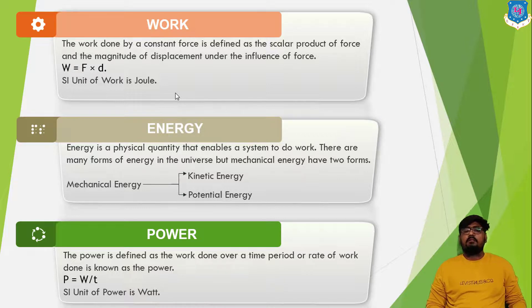As power doesn't have any direction, it is a scalar quantity. The SI unit of power is Joules per second, that is Watt. Watt can be defined as power taken to do one Joules work in one second. The unit Watt is declared in honor of James Watt, the developer of the steam engine.